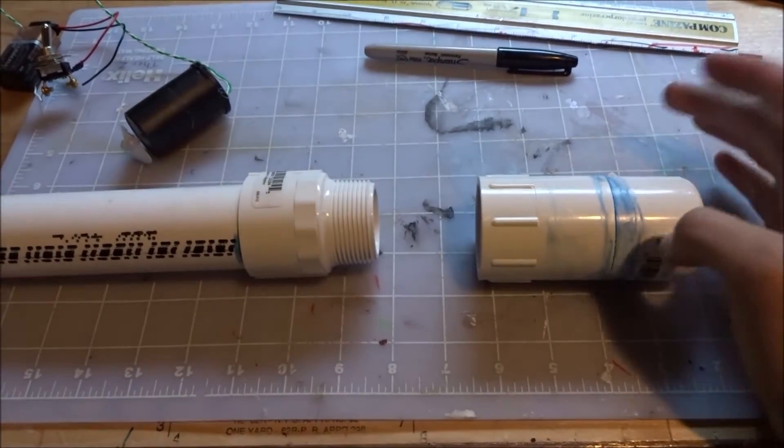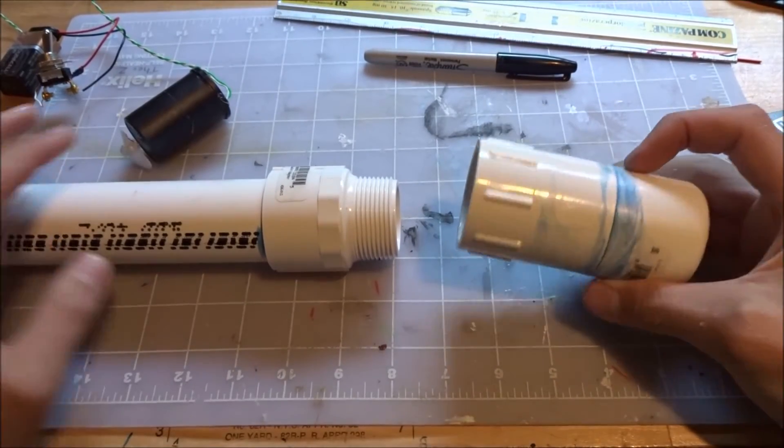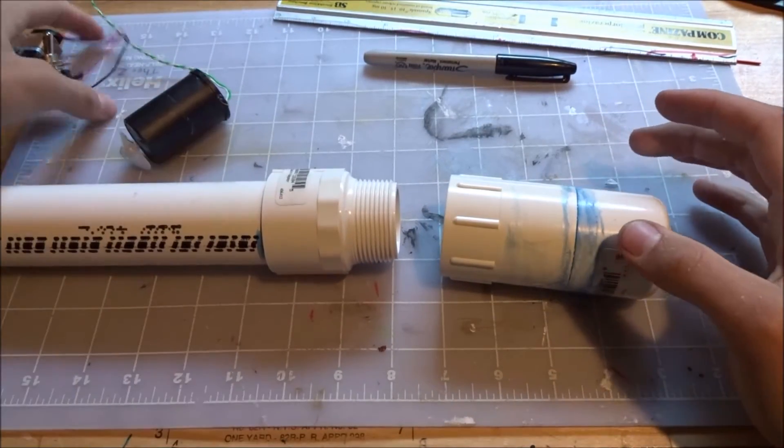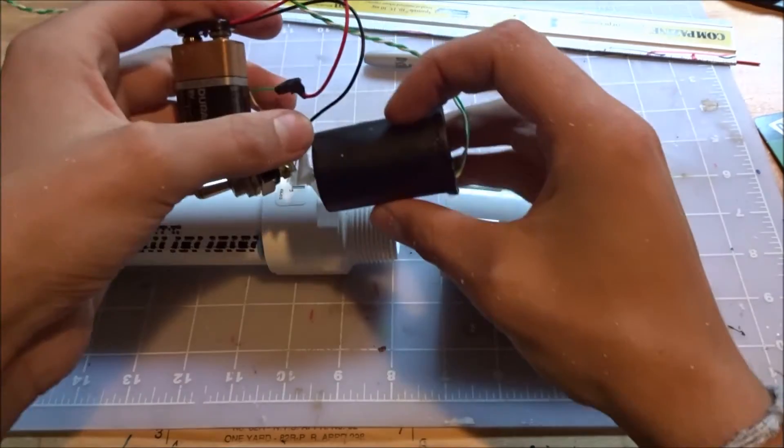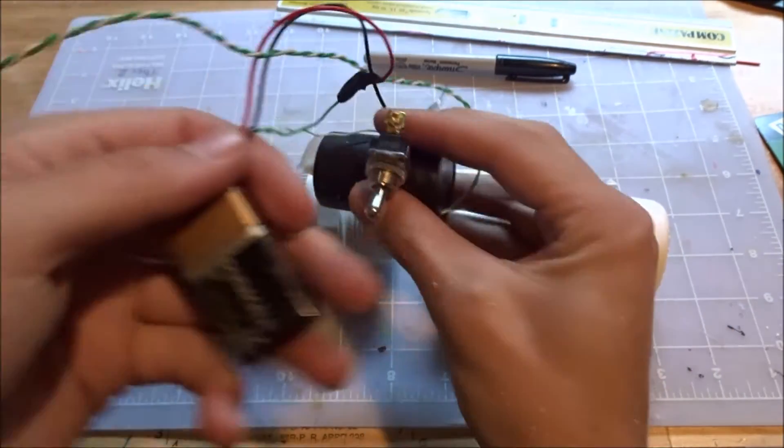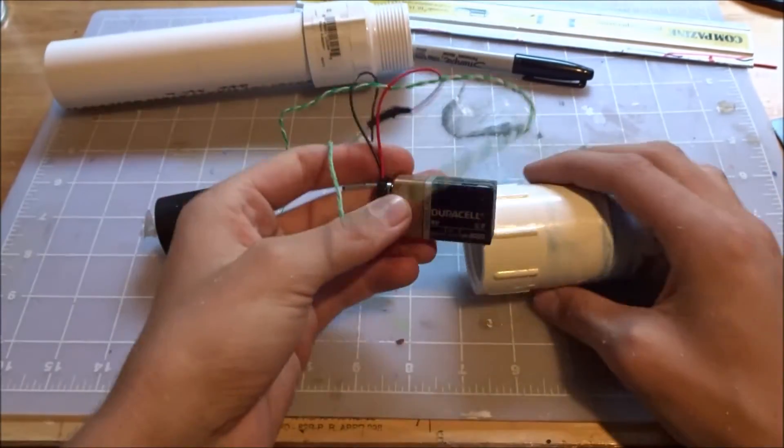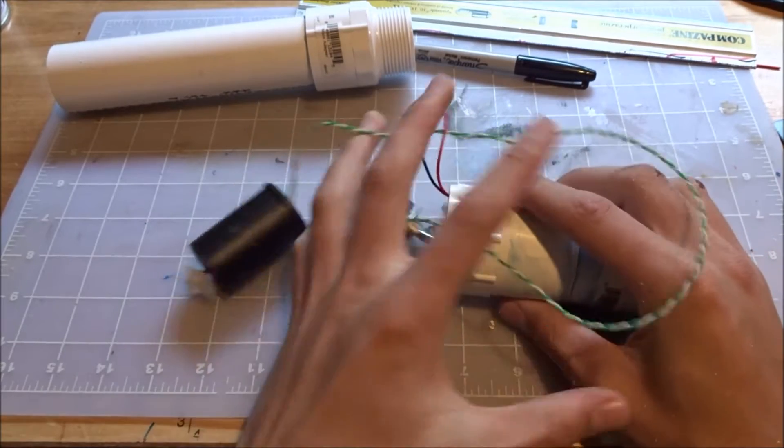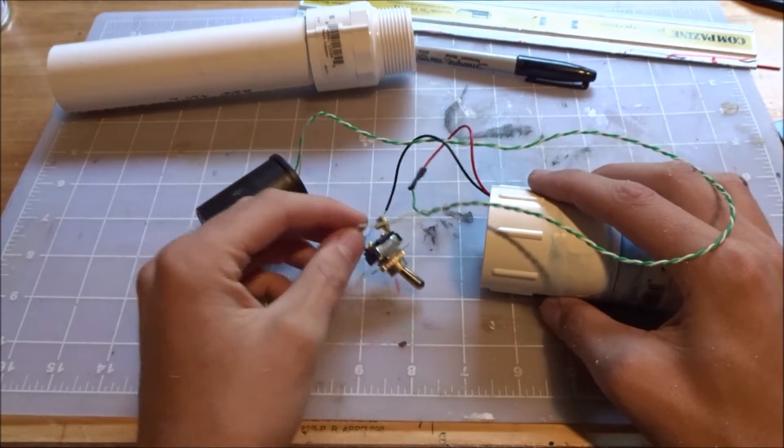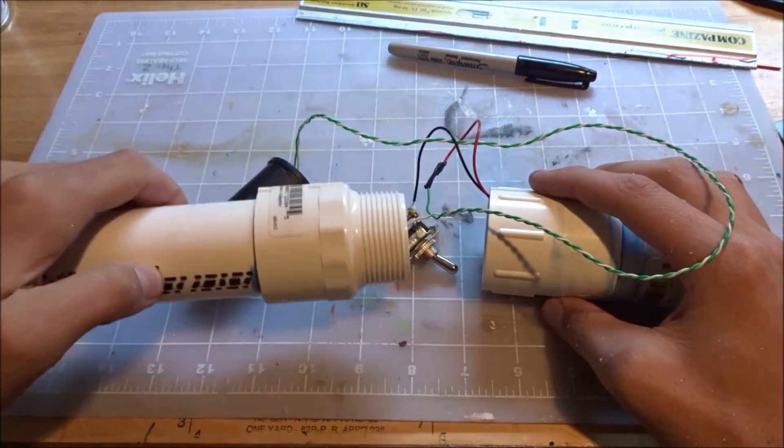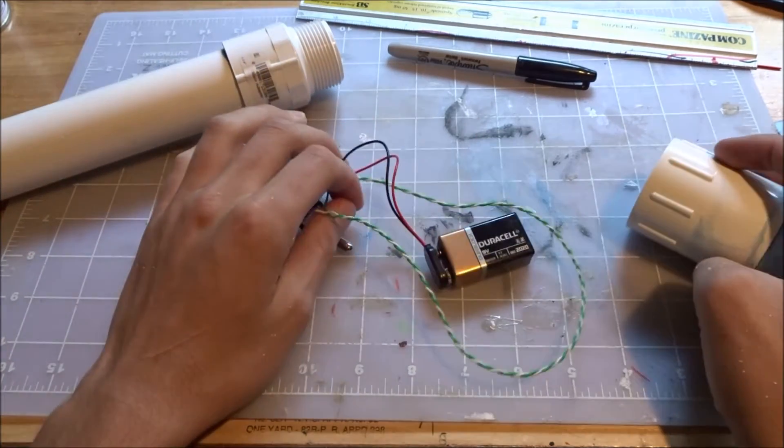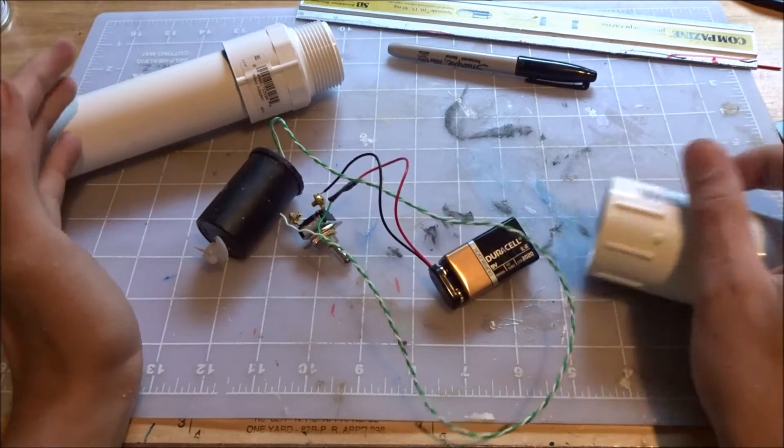I realize that I haven't explained why I have a separate top section. This is so that when I have the motor and the switch in the device, I have the battery as easy access that'll sit inside of here so that if I need to change the battery, I can just unscrew the top and then change the battery and it won't have to be completely useless.